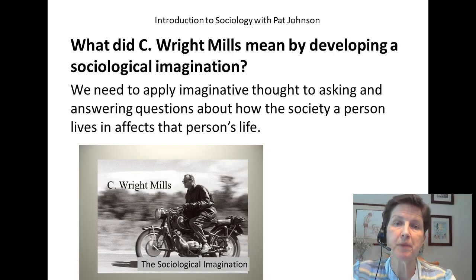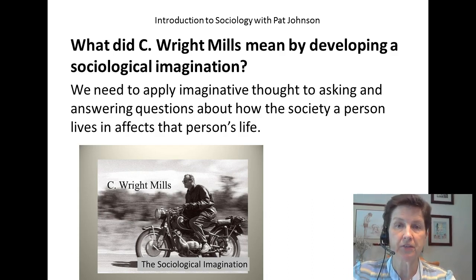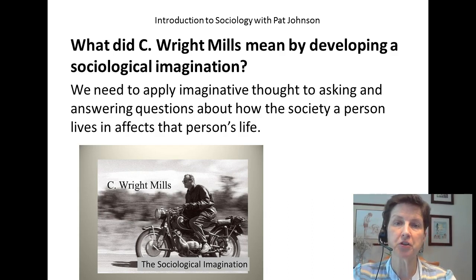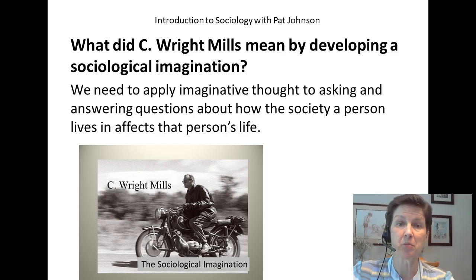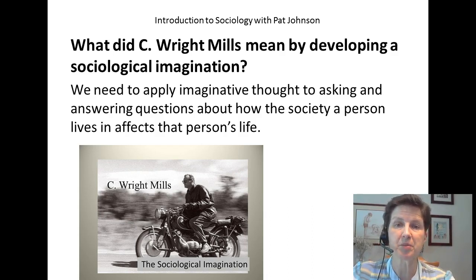A sociologist by the name of C. Wright Mills used the concept of developing a sociological imagination. When I think of C. Wright Mills, I always think of the picture shown of him in my Introduction to Sociology class — C. Wright Mills traveling on his motorcycle. He was thought to be somewhat of a rebel and a free spirit, but more importantly he's known for this concept of developing a sociological imagination.